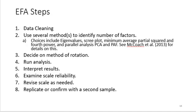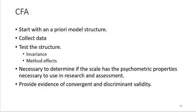A CFA starts with the measurement model that you have identified in EFA, or that someone else has published — that's your a priori model structure. You then collect data for the population that you have interest in and test whether the model fits your data well. You might also want to test for invariance, which is a field within validity all of its own, and test for things like method effects. It's also necessary to determine if the scale has the psychometric properties necessary to use in research and assessment — things like calculating reliability and providing evidence of convergent and discriminant validity.